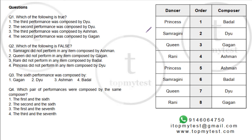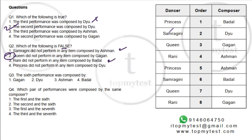Now we can solve the questions. Question one — which of the following is true? 'The third performance was composed by Dew' is false. 'The second performance was composed by Dew' is true — that's the answer. Question two — which of the following is false? 'Samaragini did not perform any item composed by Asman' is actually true. 'Queen did not perform any item by Gagan' is false — Queen actually did perform a Gagan item. 'Rani did not perform anything by Badal' is true, and 'Princess did not perform by Dew' is also true. So the false statement is option two.